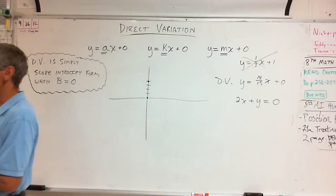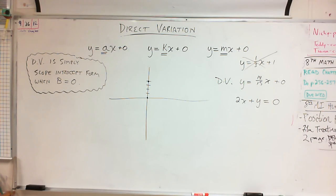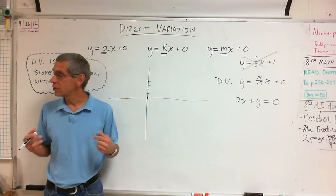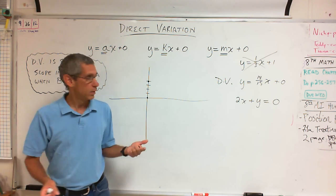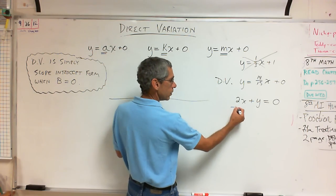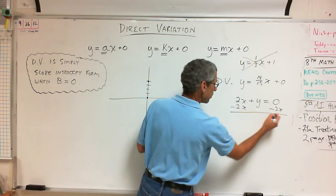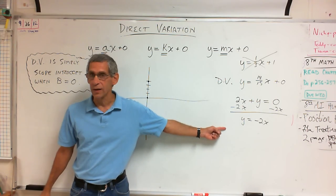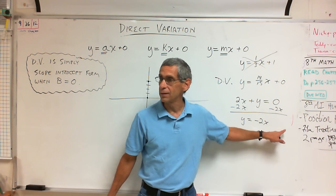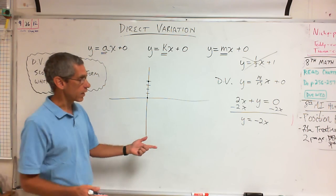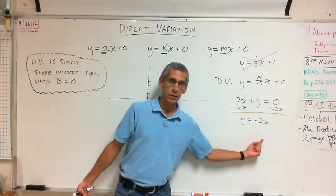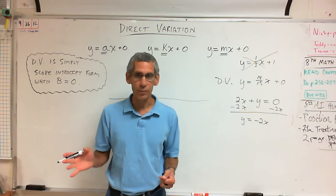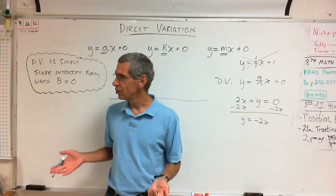Is that an example of direct variation? Yes. Because if you move the 2X, it's Y equals negative 2X. The easy way to do it is to put it in slope-intercept form — solve for Y. So I'm going to subtract it, and I now have Y equals negative 2X. That is direct variation. There's no plus three or plus ten or minus seventy-five — it's plus zero.